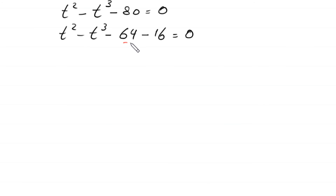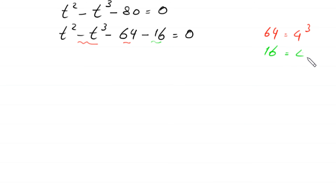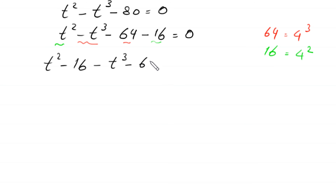We split negative 80 as negative 64 minus 16. Note that 64 equals 4³ and 16 equals 4². So we group the cubic terms and the squared terms: (t² - 16) minus (t³ - 64) equal to 0, writing t² - 4² minus (t³ - 4³) equal to 0.